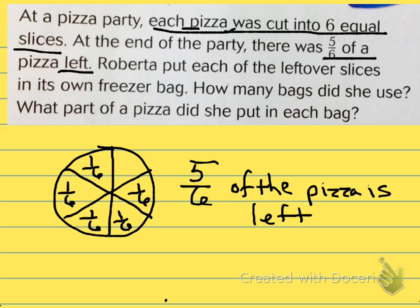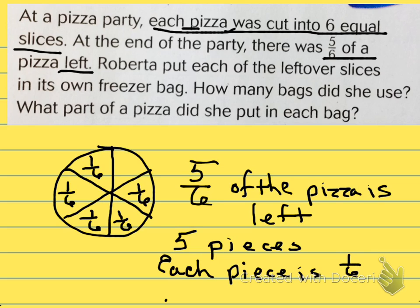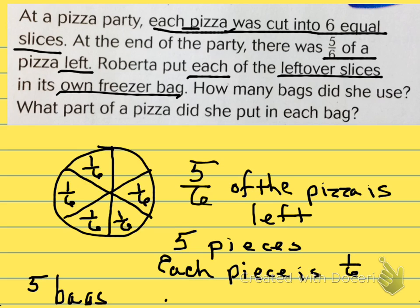How many pieces are left? Five pieces are left. So if there are five pieces, how big is each piece? Each piece is one-sixth. So let's answer our question. How many bags did she use? She put each piece of pizza in its own freezer bag. If I have five pieces left, then I need five bags. Five bags were used. And it says, what part of the pizza did she put in each bag? Each bag contained one-sixth of the pizza.